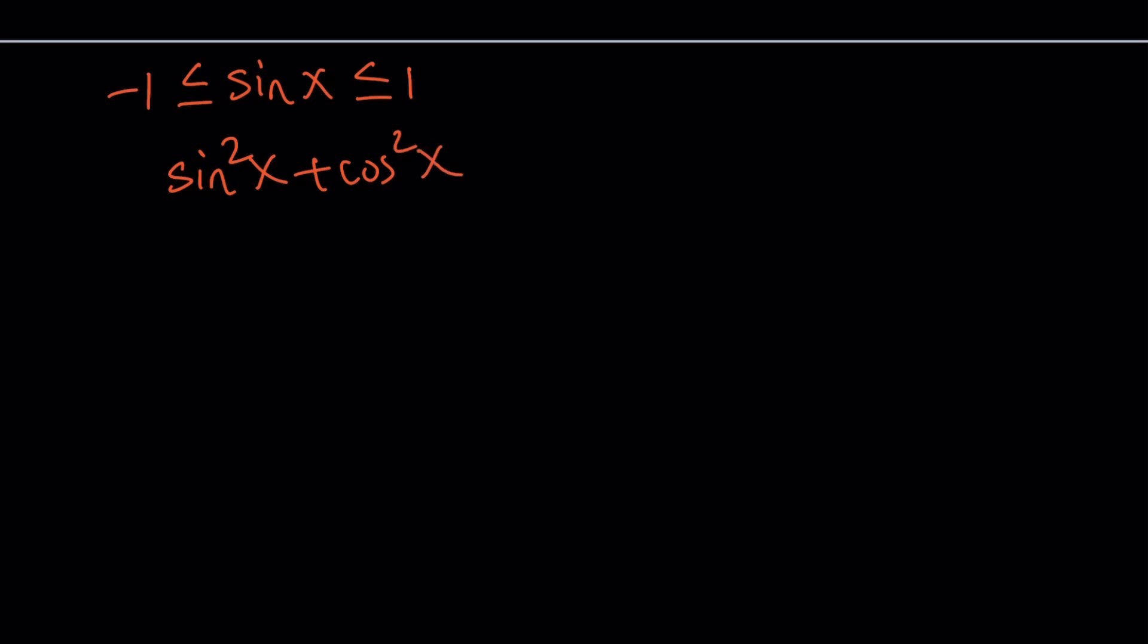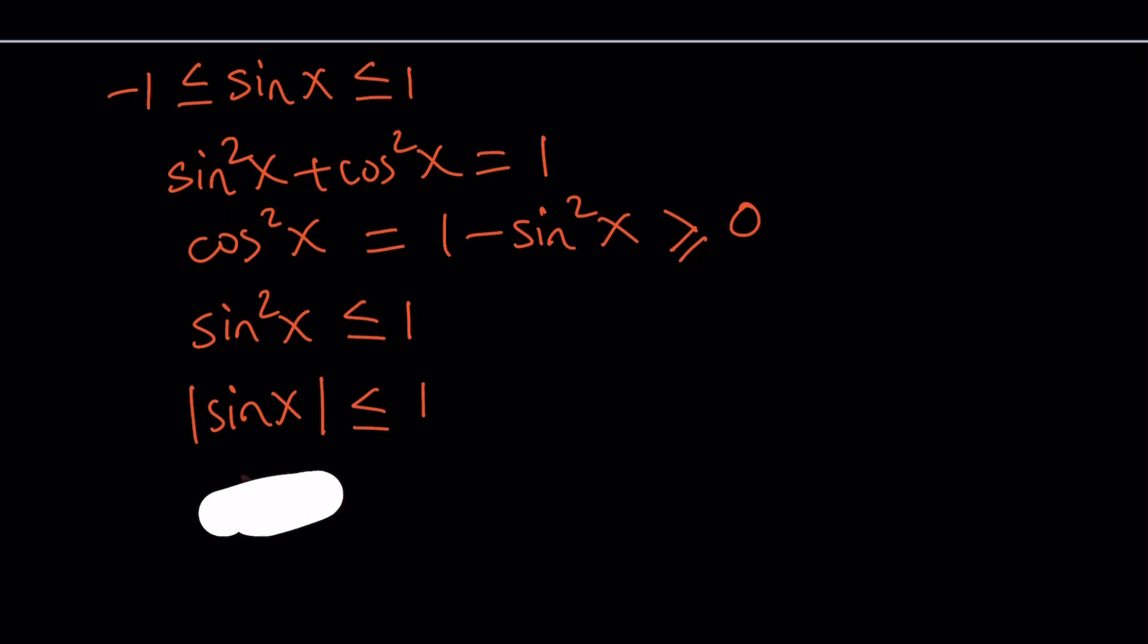Sine squared x plus cosine squared x equals 1. Let's isolate cosine squared here, which can be written as 1 minus sine squared. And for real x values, cosine squared x cannot be negative. Therefore, it's always going to be greater than or equal to 0. This means sine squared x is less than or equal to 1. And if you take the square root, you end up with the absolute value of sine x is less than or equal to 1.